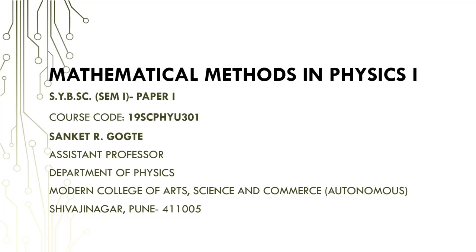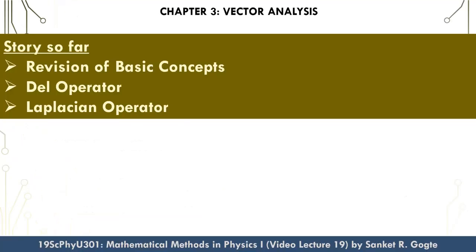Hello everyone, welcome to this video lecture of 19 SCP HYU 301. We have been discussing the third chapter, vector analysis. This is the story so far: we revised the basic concepts where we saw the two ways to find the product of two vectors — the first one is the dot product and the second one is the cross product.